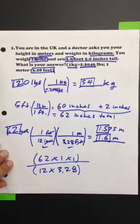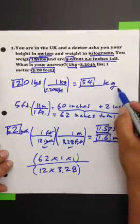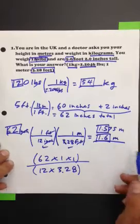So when someone asks you what's your height and weight if you're 5 foot 2 and 120 pounds? I weigh 54 kilograms and I'm 1.6 meters tall.